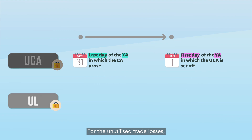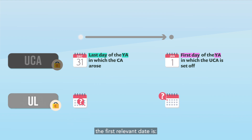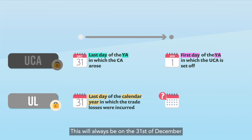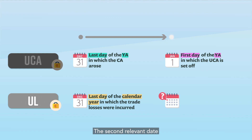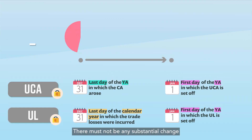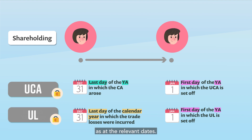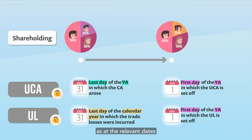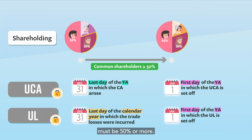For the unutilised trade losses, the first relevant date is the last day of the calendar year in which the trade losses were incurred — this will always be on the 31st of December, regardless of your company's financial year end. The second relevant date is the first day of the YA in which the unutilised trade losses are set off against the income — this will always be on the 1st of January. There must not be any substantial change in shareholders and their shareholdings as at the relevant dates, meaning the percentage of shareholding of the common shareholders as at the relevant dates must be 50% or more.